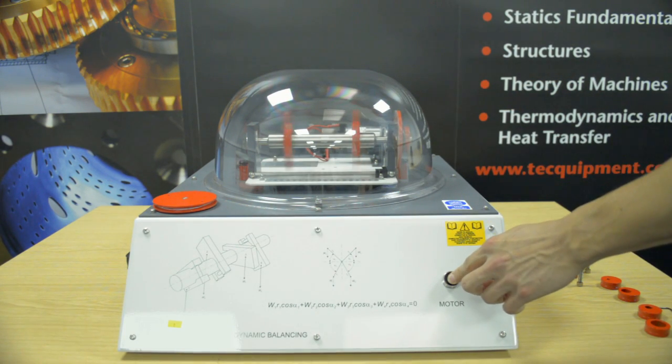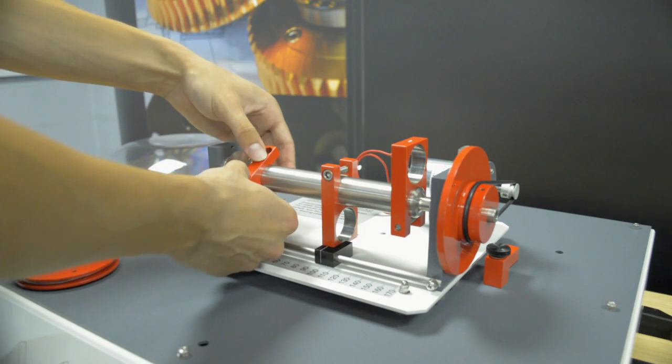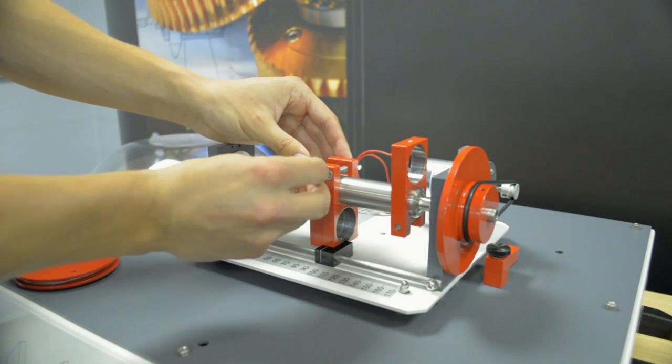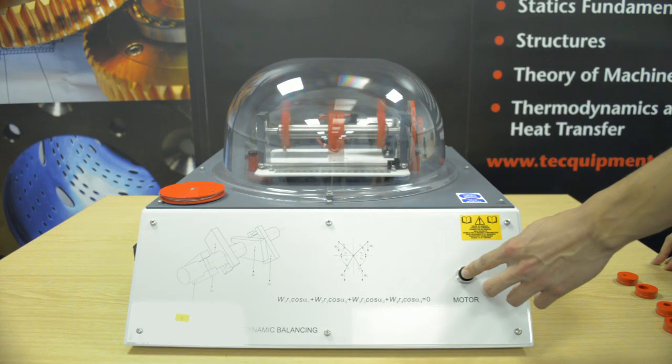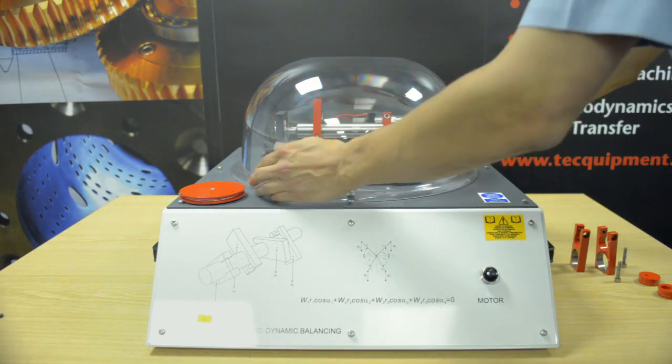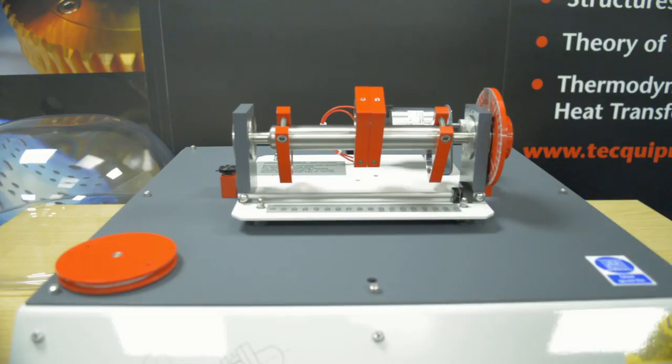Dynamic balancing can be calculated using mathematical relationships between moment and mass angles or using vector diagrams and Bose notation. The flexible mounts allow the assembly to vibrate showing imbalance during dynamic balancing tests.